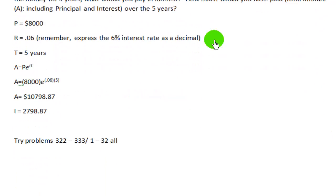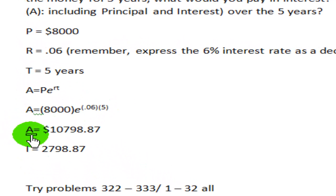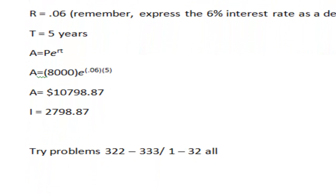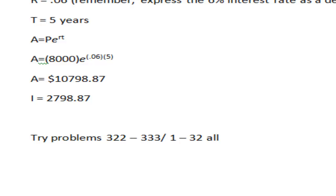After you take out your calculator and you punch in the numbers and you perform the operations, you get that the total amount is $10,798.87, giving you a total interest payment over the five years of $2,798.87. The reason why there are three different types of compounding interest is simply that it's a way for whoever's lending money to make more money.